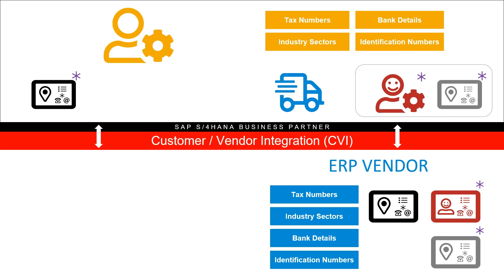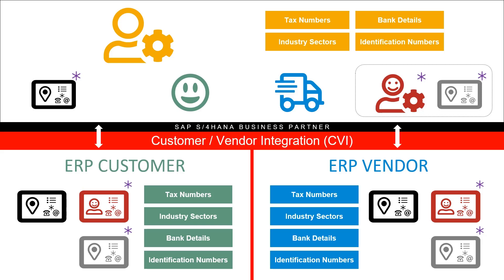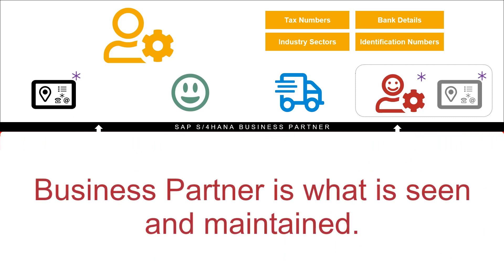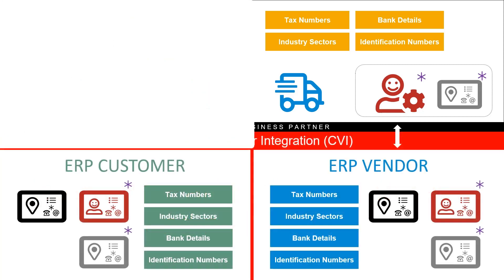That vendor master is also created in full — with its own Business Address Services record, its own contact persons, and separate Business Address Services records for each contact person that has a business address. When a business partner, one legal entity, acts as both a customer and a supplier, both plain old customer and vendor master data objects are created with all their dependent objects. But data cannot simply be transferred from business partner to customer and vendor, as the data models and functionality are different. Tax numbers, industry, bank details with validity dates, and identification numbers with validity dates are part of the business partner object model, and contact persons are part of that model too — raising many questions about which objects are transferred.